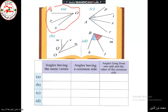For branch A, the angles have the same vertex — yes, that's true. The vertex is the same. The angles have a common side — yes. The angles lie on one side and another of the common side — we have an angle above the common side and the other angle underneath.